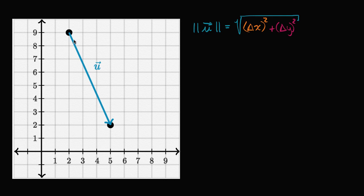So what's our change in y? We're starting at our initial point at y equals nine, and to get to the y value of our terminal point, we're going down to y equals two. Going from nine to two, our change in y is negative seven.